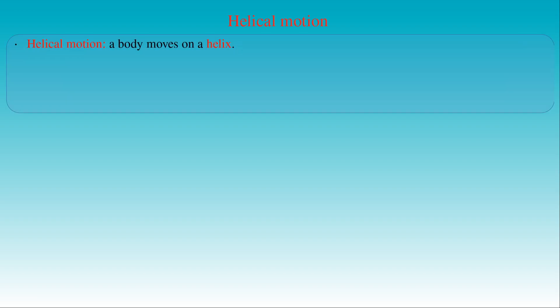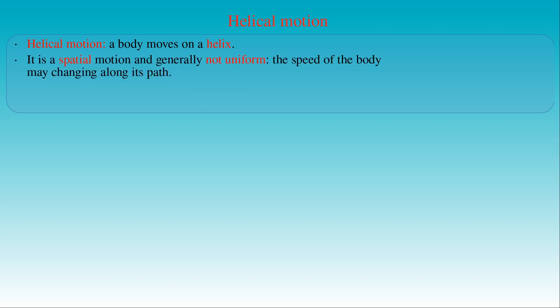The last type of motion discussed among basic motions is helical motion. We talk about helical motion when a body moves on a helical-shaped path, that is, the trajectory of the traveling body is a helix. It is a spatial motion, and is not necessarily a uniform one. In nature or in everyday life we meet different types of helical motion, where the speed of the traveling body is either constant or changing along its path.